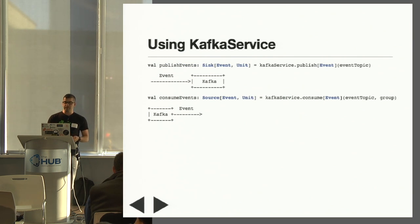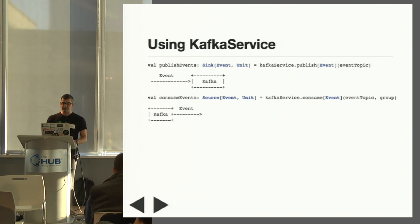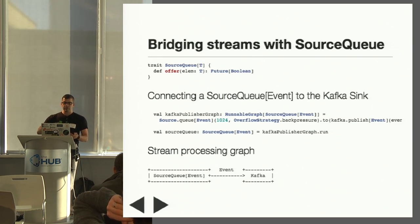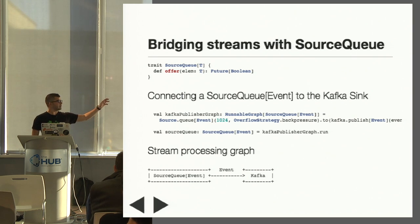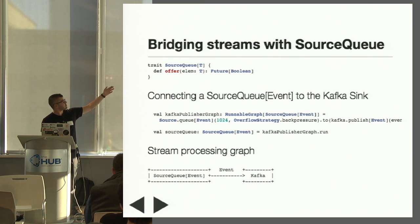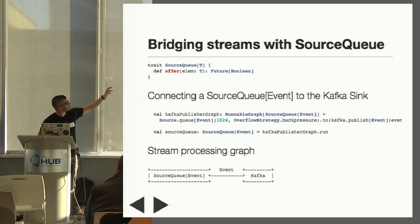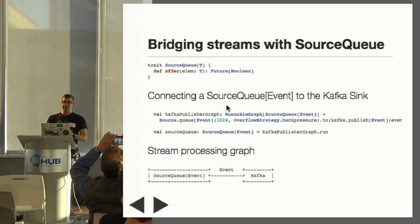So ideally, for every incoming WebSocket connection, we could just connect it to publish events, but that would be very inefficient because for every connection we would have to create one Kafka producer — there'd be a lot of wasted resources. So what we're going to do instead is use source queue. It's a very simple trait: all it is is something that can be offered elements of type T, returns a Future[Boolean] — true if the element was added to the queue, false if it wasn't, and fails if the underlying queue has failed. So we're going to create a Kafka publisher graph that consumes elements via source queue and publishes them to Kafka.